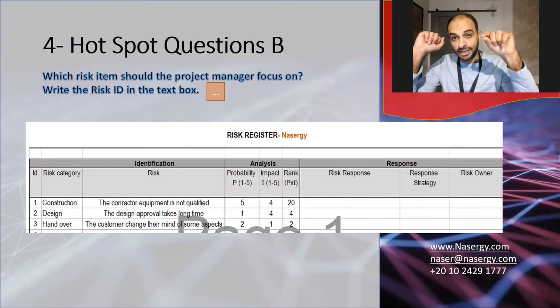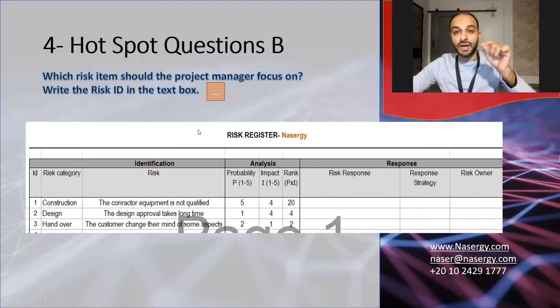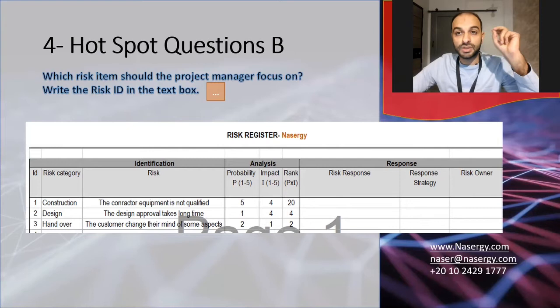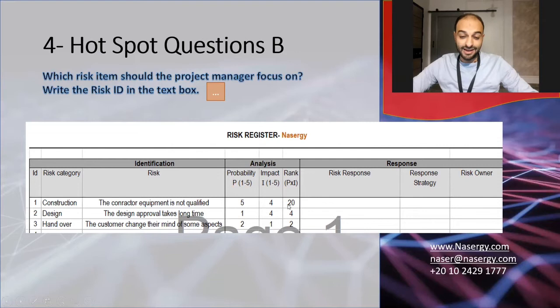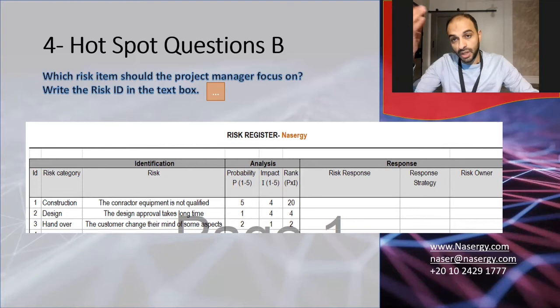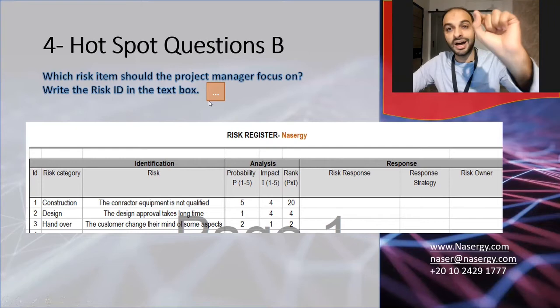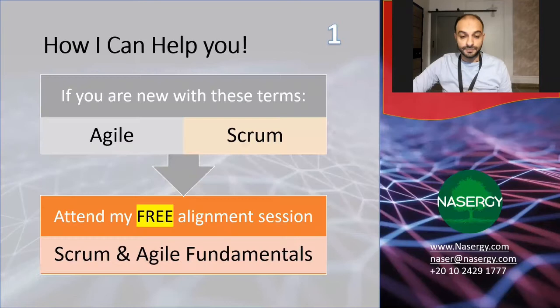Another hotspot type presents a table. You read the question and type your answer into a text box. For example: which risk item should the project manager focus on? The table shows probability, impact, and risk rank. Risk rank number one is 20, which is the highest, so you type the risk ID number one — the contractor equipment is not qualified — into the text box.